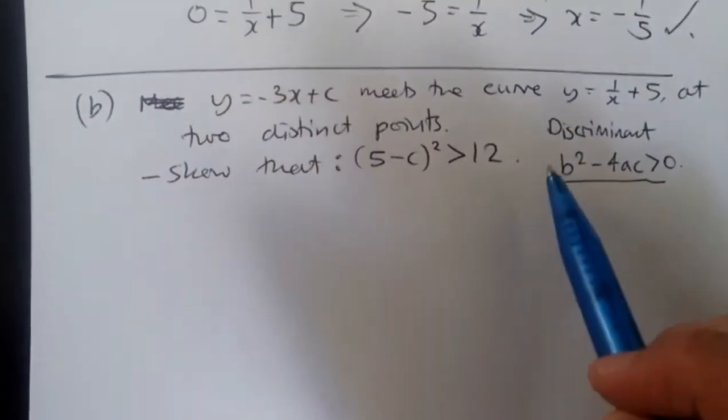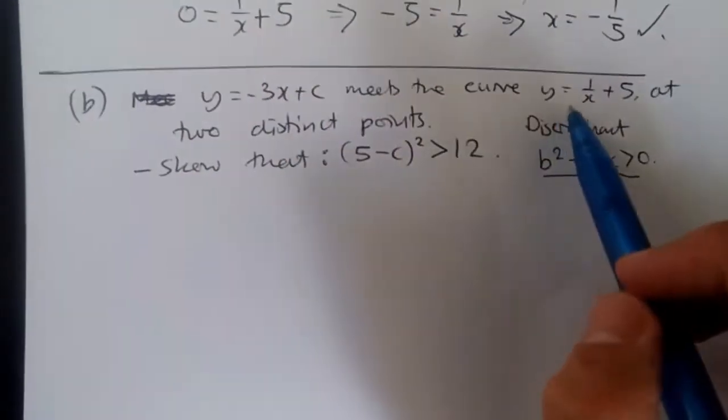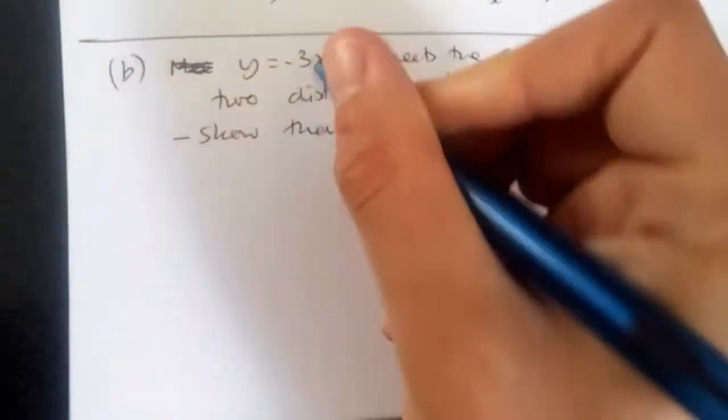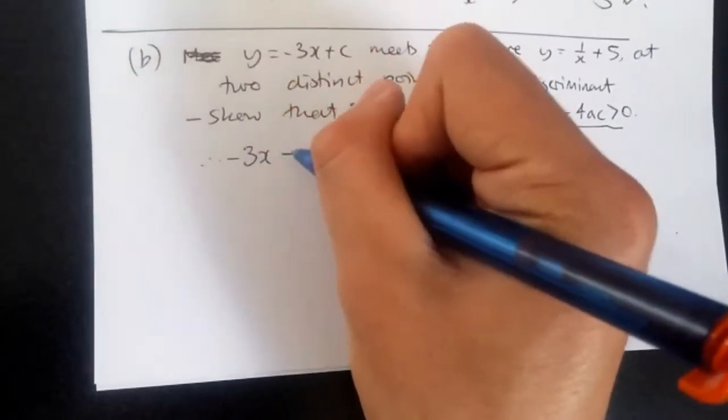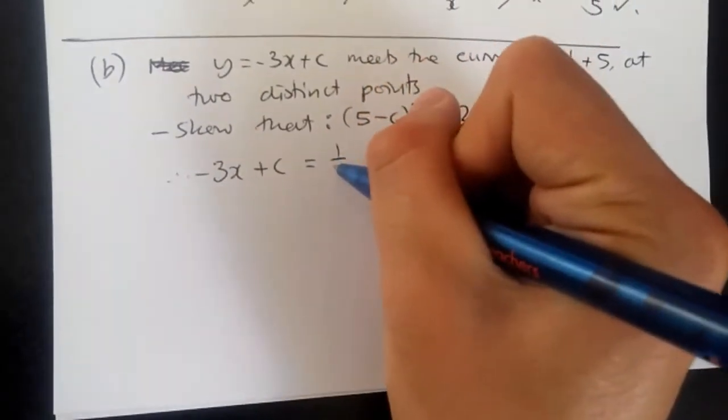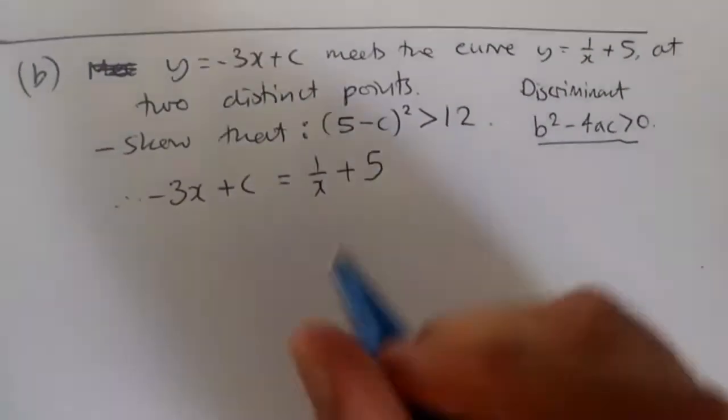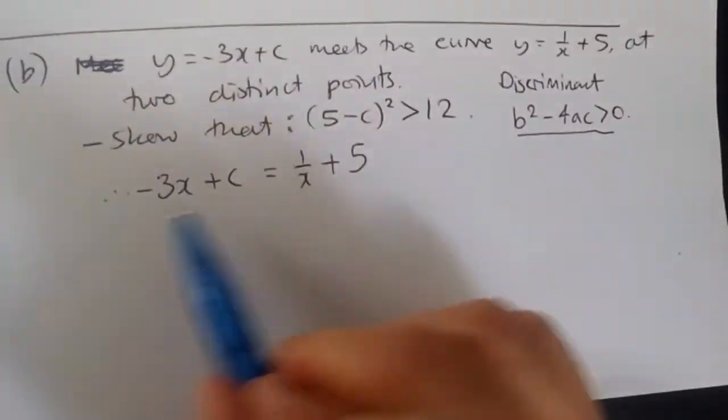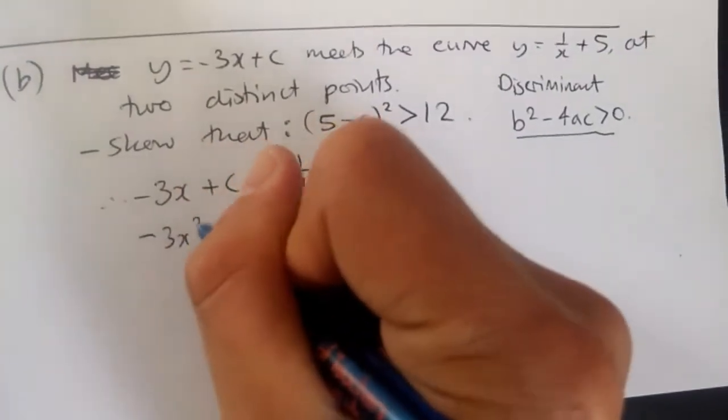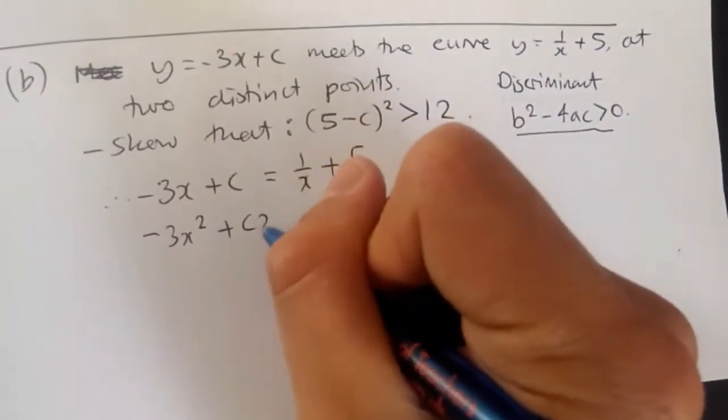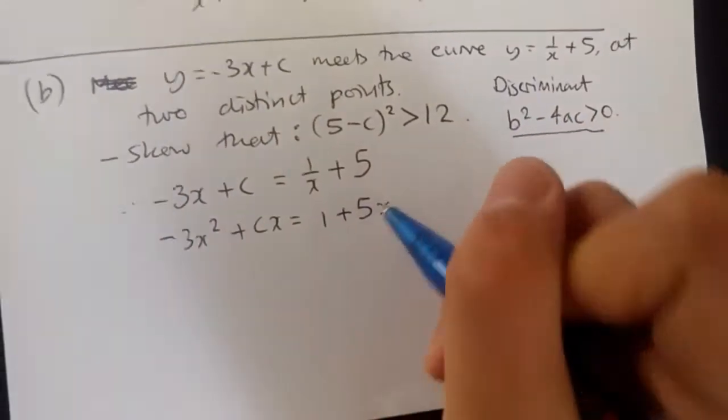So let's try and produce this. Knowing that this is to meet, this means that this equation equals this equation. So we're going to have, in this case, minus 3x plus c equals 1 over x plus 5. Now, in this case, what you want to do is multiply x across to clear the fraction. So multiply x, we're going to get minus 3x squared plus cx equals 1 plus 5x.